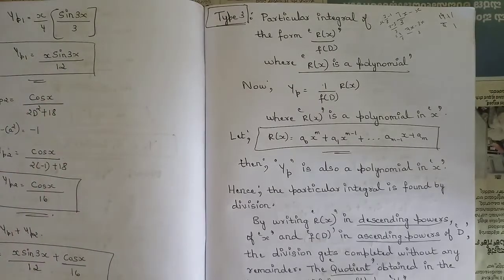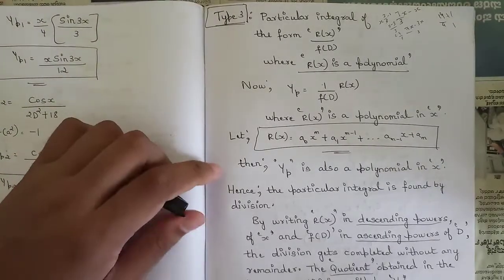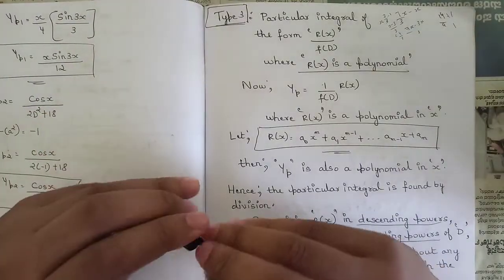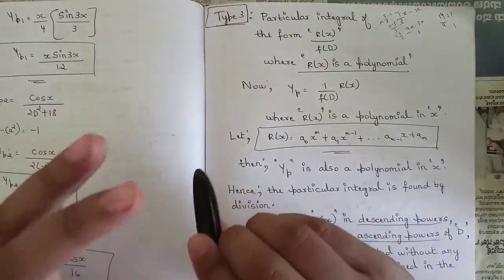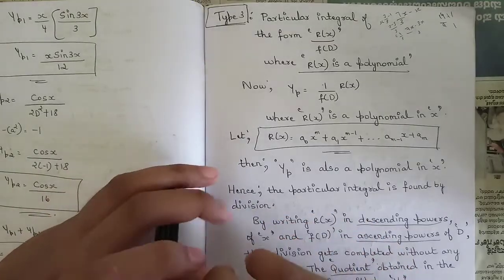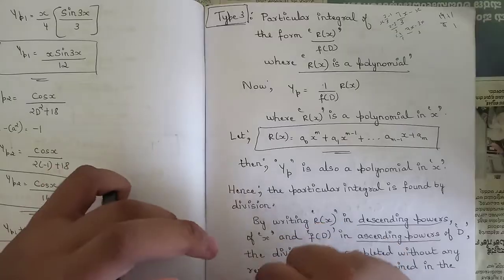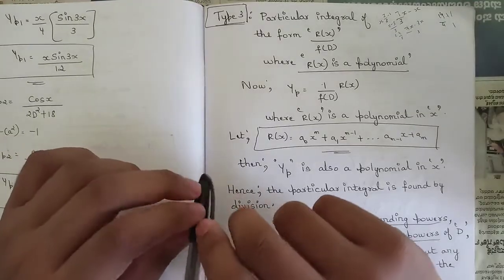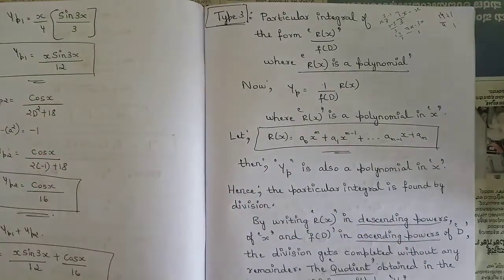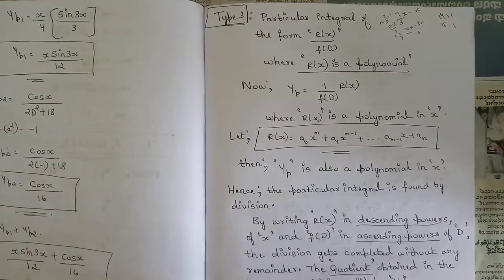Hello everyone, welcome to this new session. In our last classes we discussed all the problems related to Type 1 and Type 2 of non-homogeneous equations, along with the homogeneous equations where r(x) equals 0. Now we are continuing with the non-homogeneous Type 3 solutions where r(x) is a polynomial.